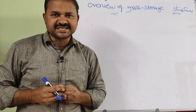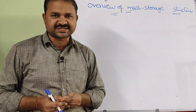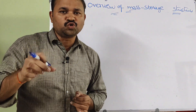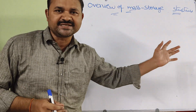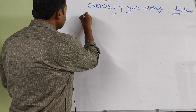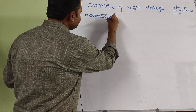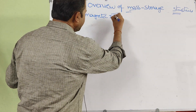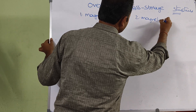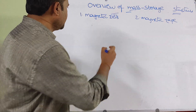Let us discuss the overview of mass storage structures. In this concept, we will mainly discuss two mass storage structures. Mass storage is nothing but secondary storage structures. The first structure is magnetic disk, and the second one is magnetic tape.